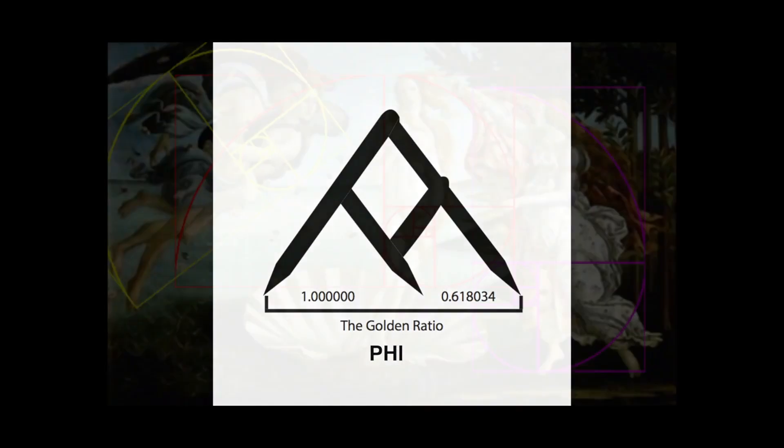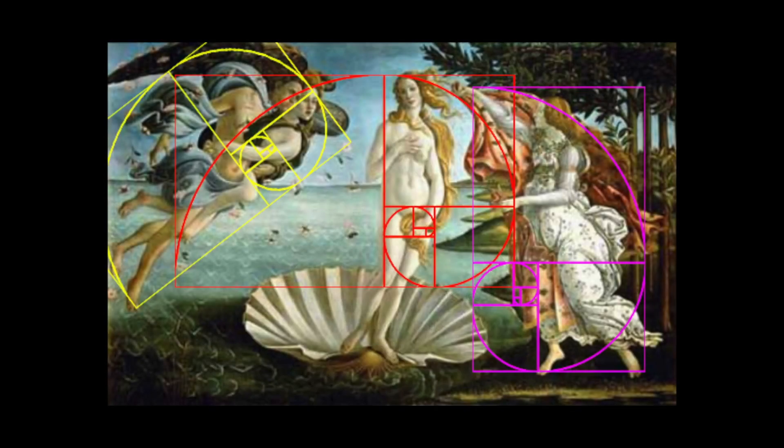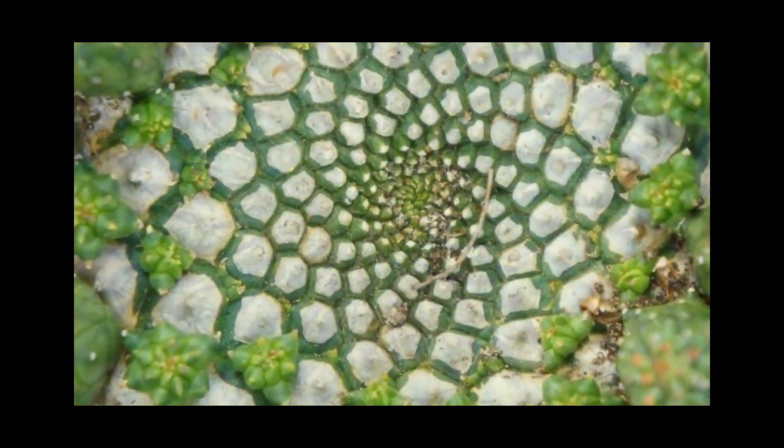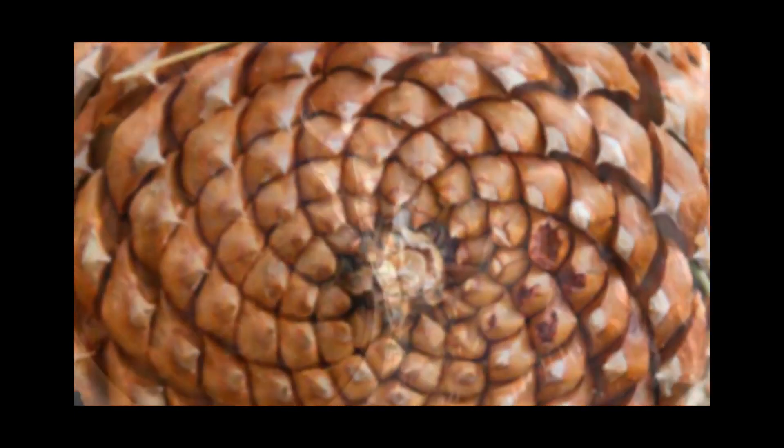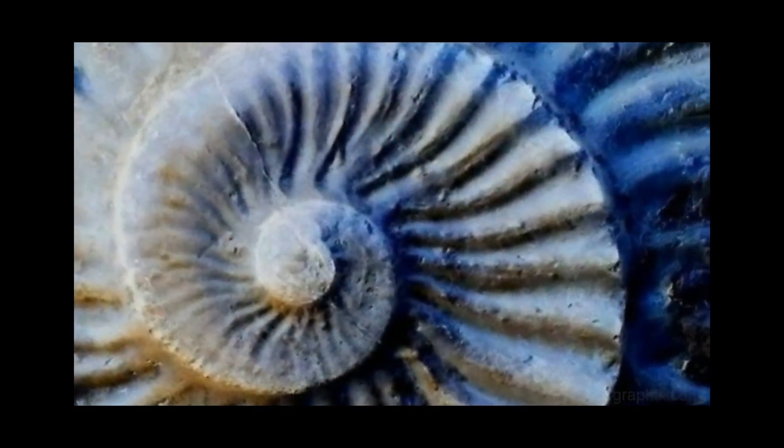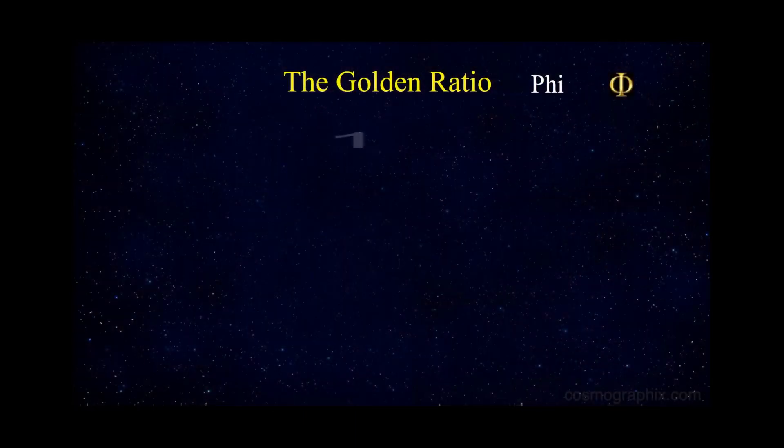This proportion represents the beauty of nature as nature seems to use this average to create all things from pine cones to flowers to shells to more. Its presence has been so well known the Greeks called it the dividing line in the extreme and mean ratio. It's also called the golden section, the golden ratio, and the golden mean.